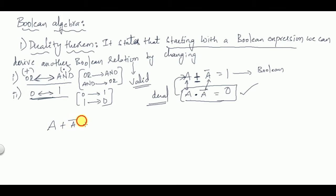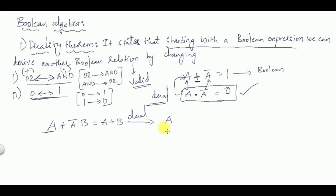Similarly, if you have a + āb = a + b, and you want to find the dual: a stays as is, the plus becomes AND (multiplication), ā stays as is, AND becomes OR (plus), and b stays as is. So the dual is a · (ā + b) = a · b.